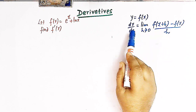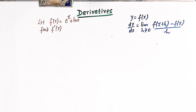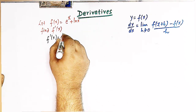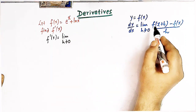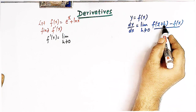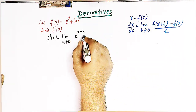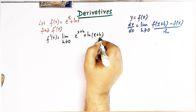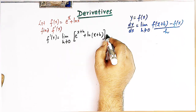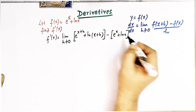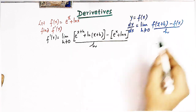So let us apply this limit definition of derivative to get the derivative of the function f of x, which is the sum of e to the x plus log of x. We can write f prime of x as a limit h tends to 0, where f of x plus h is obtained by replacing x by x plus h, giving us e raised to x plus h plus log of x plus h, then minus f of x which is e raised to x plus log of x, all divided by h.